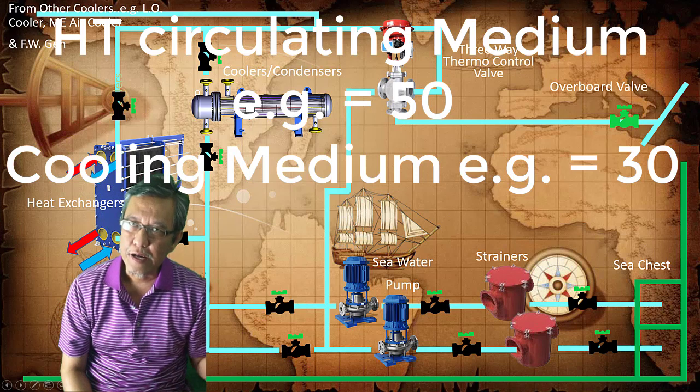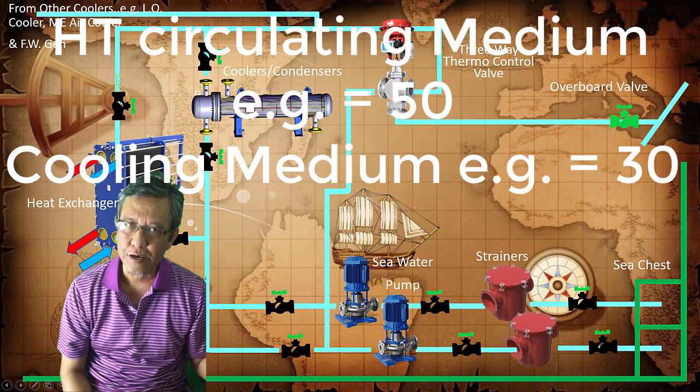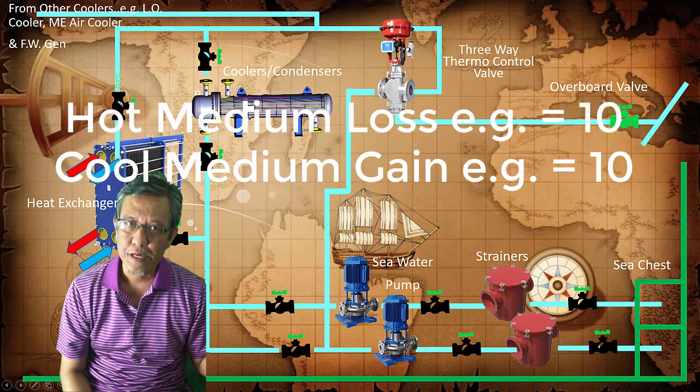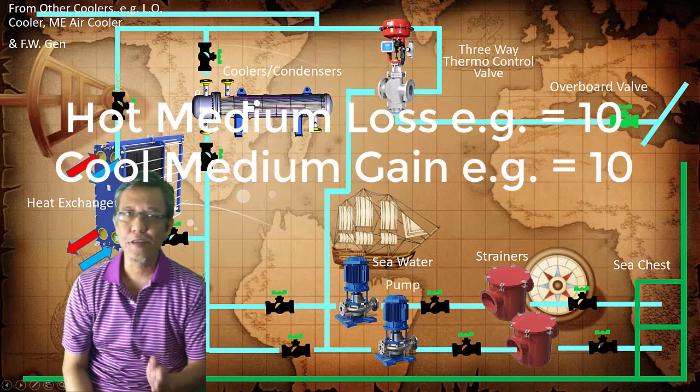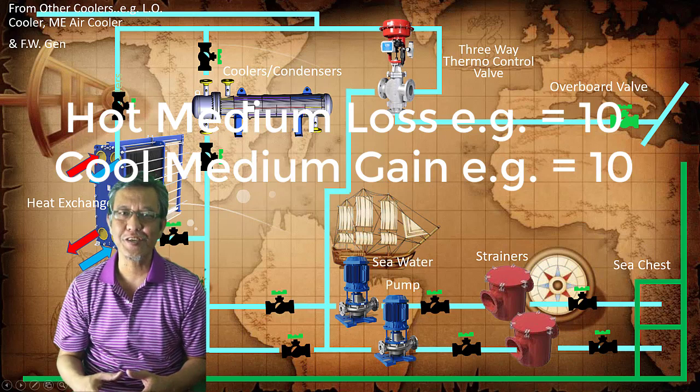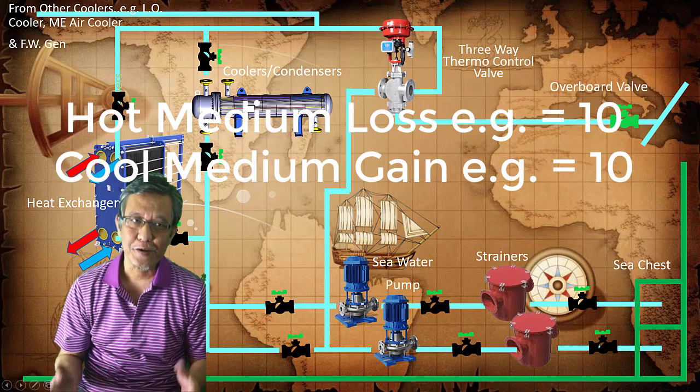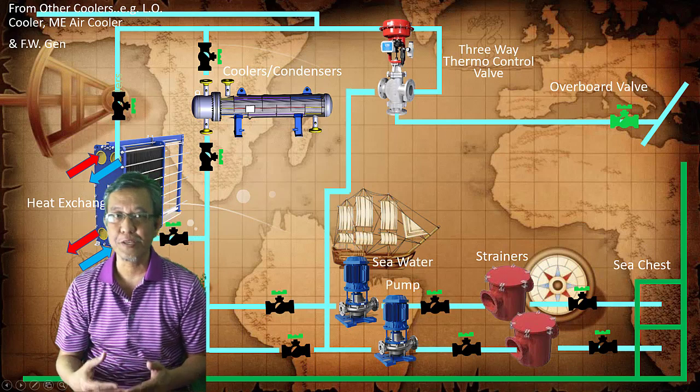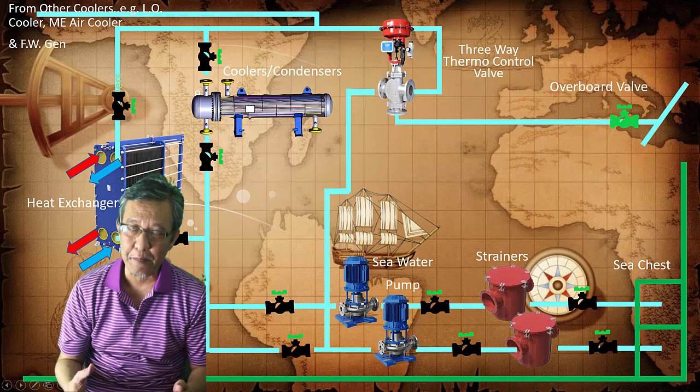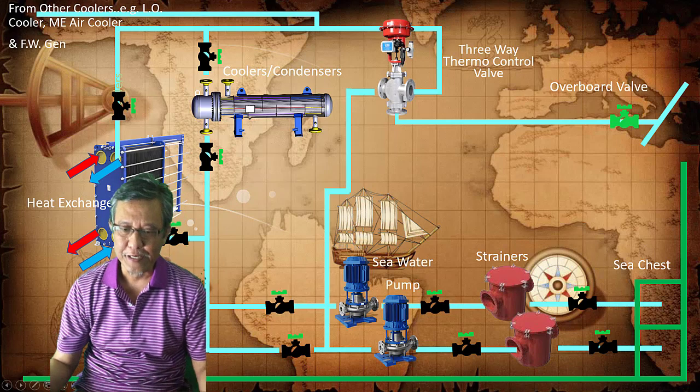And you have the cooling medium at 30 degrees. If you have a 10 degree loss on the hot medium, then you will have a 10 degree gain on the colder medium. So your heat exchanger is applying that kind of principle, and of course, in applications, not just in cooling.